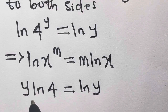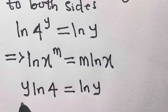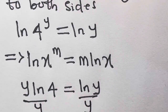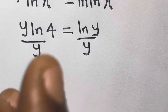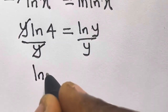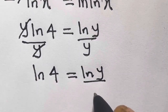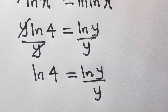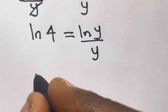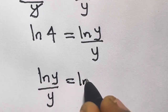So we can easily divide both sides by y here. We have ln(4) divided by y, divide by y — this cancels out. So we have ln(4) equals ln(y) divided by y, which is the same as ln(y) divided by y equals ln(4).